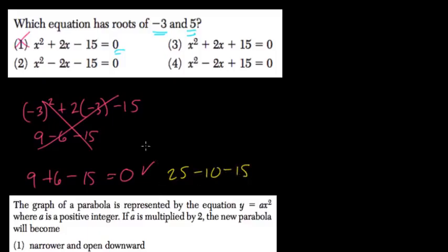Now we plug in 5. 5 squared, 25, minus 10, minus 15. That also equals 0, so the answer is 2.